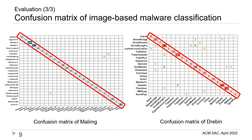In this slide, we show the confusion matrix of image-based malware classification. Many samples are on the diagonal, which indicates they are correctly classified. To reduce the burden on security analysts, it is important to classify samples as correctly as possible.